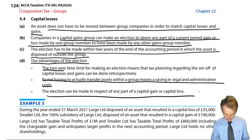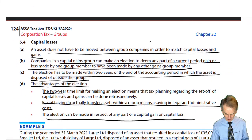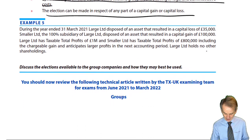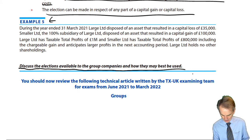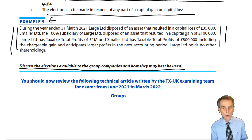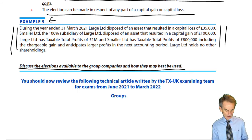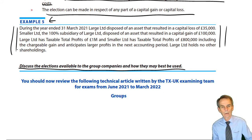These are the rules we need to know. Have a quick look back, and then as the final exercise within this chapter I'd like you to have a go at Example 5 — discussing the elections available to the group companies and how they may best be used. I've set up a little scenario for you to use your planning skills — not just a number crunch, it's a planning exercise, a much more interesting exercise. Over to you. When you go to the answer, have a quick look at it, then come back and I'll talk you through it.